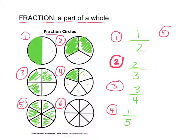Okay, so number five — how would I write this as a fraction? I shaded how many? Six. Six out of how many sections are there altogether? Six. That's actually a whole — the whole thing was six out of six.